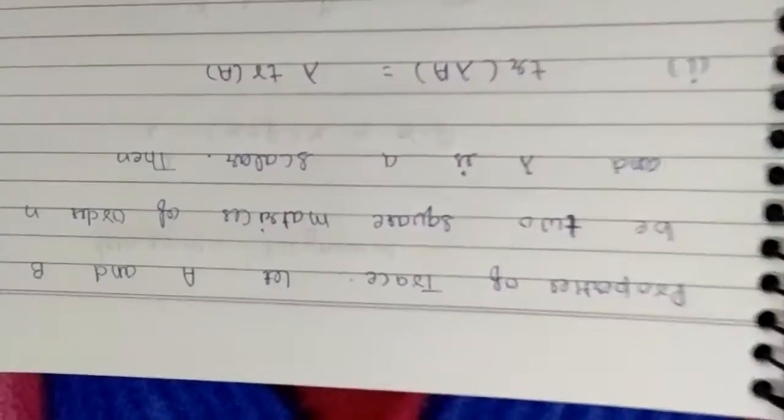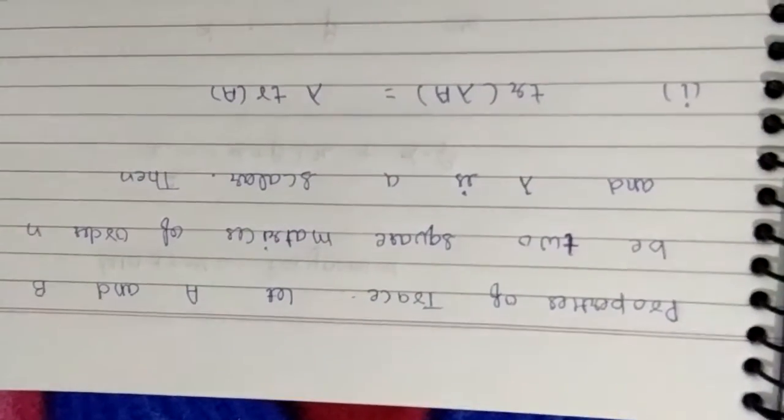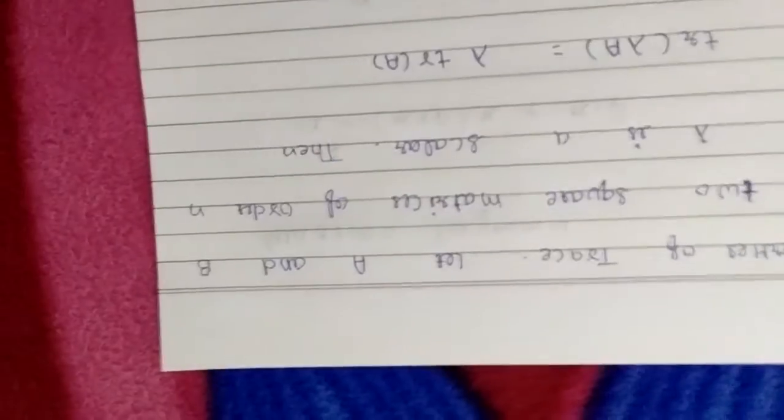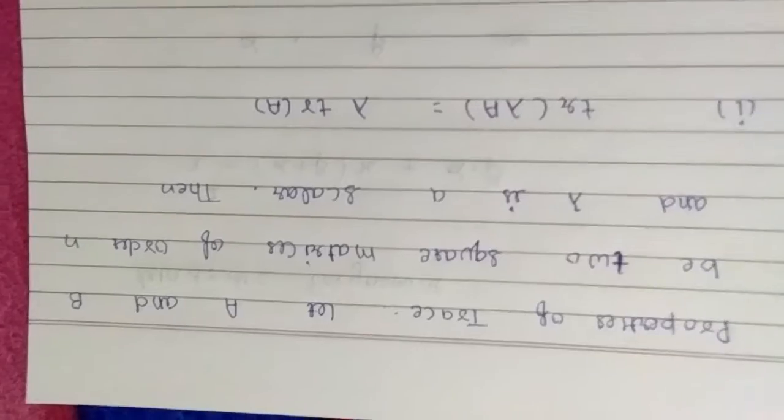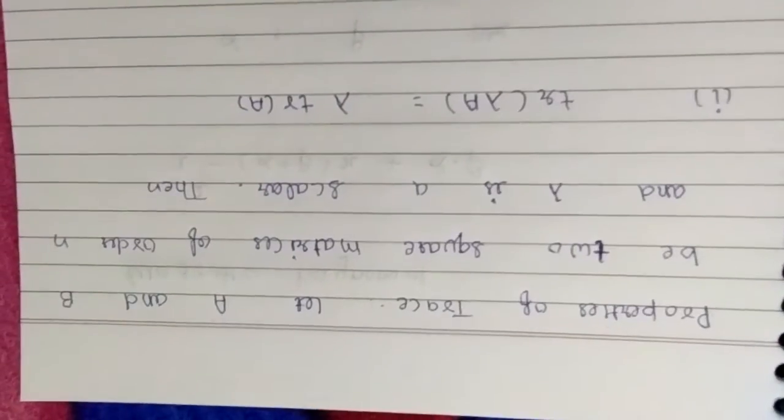Now we will discuss some properties of this trace. Let A and B be two square matrices of order n, and lambda is a scalar, then trace of lambda A will be equal to lambda trace A.